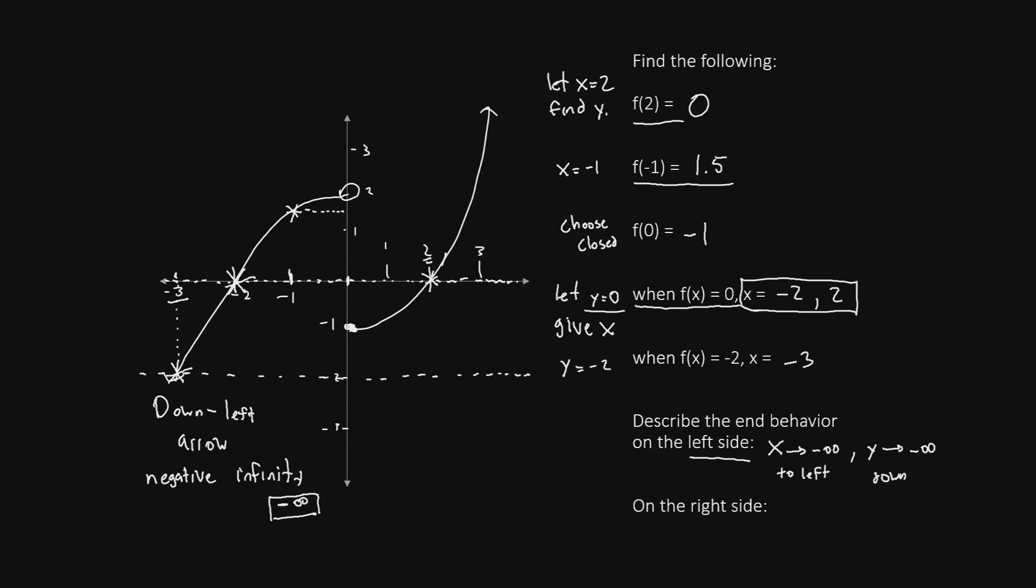Now to find the end behavior on the right side, in Math 171 the way that you'll want to write this is: as x goes to infinity, this is just a fancy way of saying going to the right.